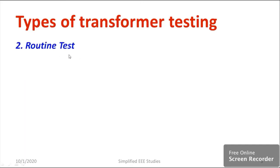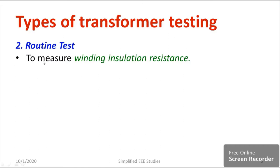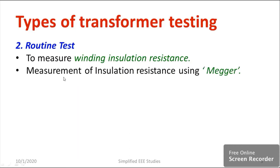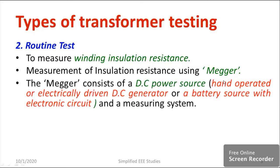I would like to discuss about routine testing. The main purpose is to check the winding resistance and insulation resistance of the transformer. Measurement can be done with the help of a device known as a Megger. There are two types: a hand-operated or electrically driven DC generator type Megger, which is conventional, and nowadays it is replaced with a battery-operated Megger with an electronic circuit.